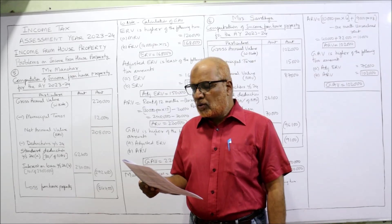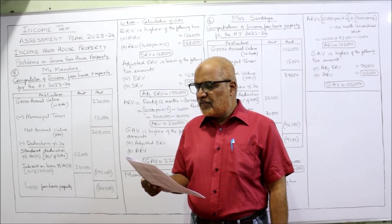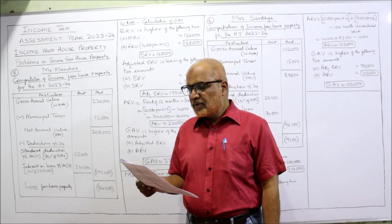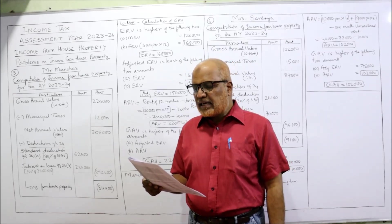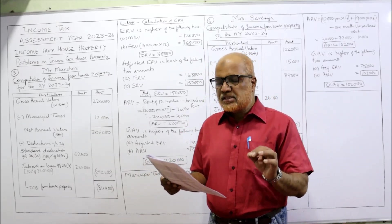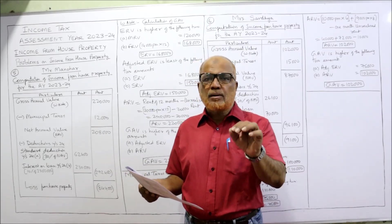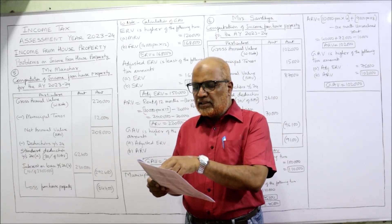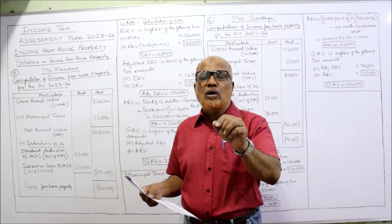The house was occupied throughout the year. The municipal valuation is rupees 1,20,000, municipal taxes 10%, and standard rent 1,50,000. The owner is Mr. Manohar and the tenant is K.R. Reddy. Municipal taxes are 10% on municipal rental value — 10% of 1,20,000 equals 12,000. Since standard rent is given, the house is governed by the Rent Control Act.